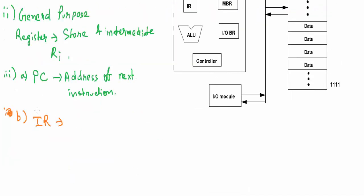Next we have instruction register or IR. It stores the instructions, that is the operation code that is currently being executed.